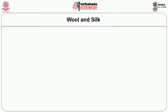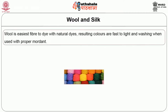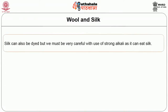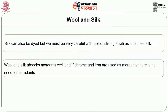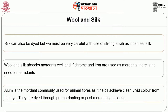Next, let us see how protein fibres are dyed. Wool is the easiest fibre to dye with natural dyes, and resulting colours are fast to light and washing when used with a proper mordant. Silk can also be dyed, but we must be very careful with use of strong alkali as it can damage silk. Wool and silk absorb mordants well; if chrome and iron are used as mordants, no assistance is needed. Alum is the mordant commonly used for animal fibre as it helps achieve clear, vivid colour. They are dyed through pre-mordanting or post-mordanting processes, and the mordant and dye concentration are determined based on the depth of shade required.